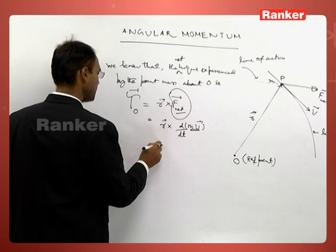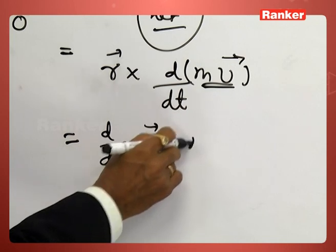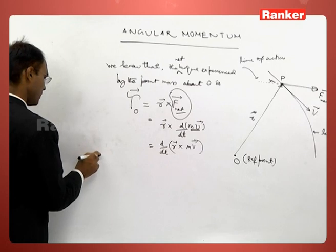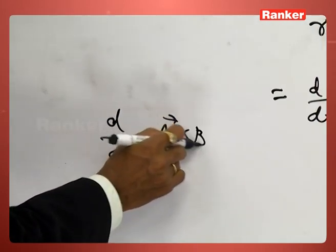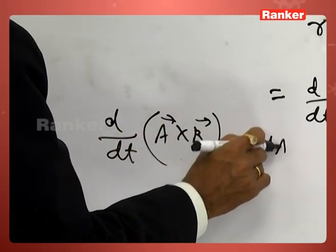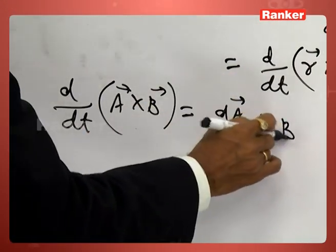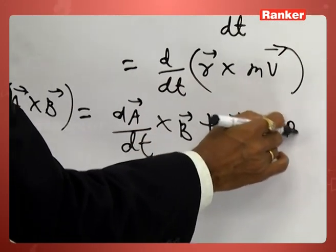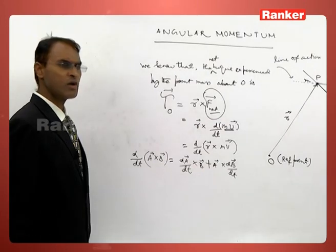This can be written as d/dt of R cross P. The time derivative of A cross B can be written as the derivative of A cross B plus A cross the derivative of B. This is a vector operation.